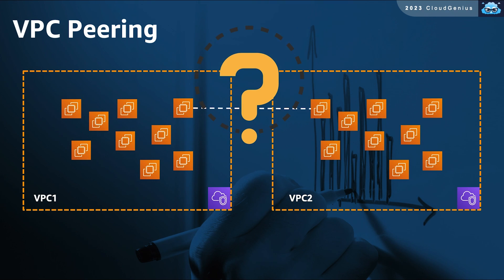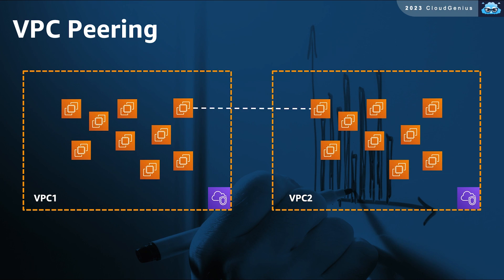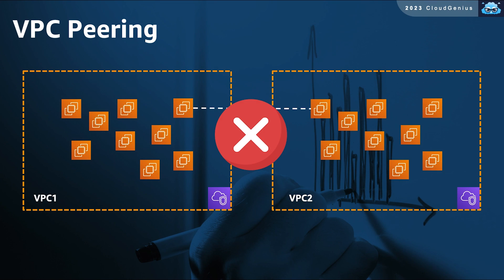Every VPC has its own isolated network space that is segregated from other VPCs. So, definitely, this traffic is not going to be allowed.